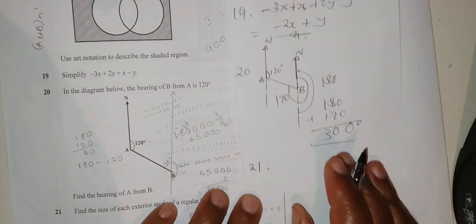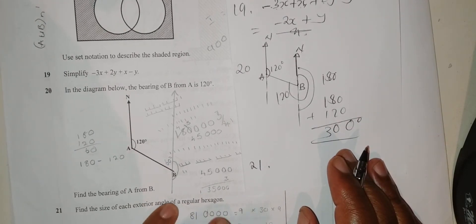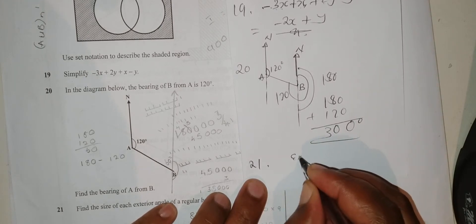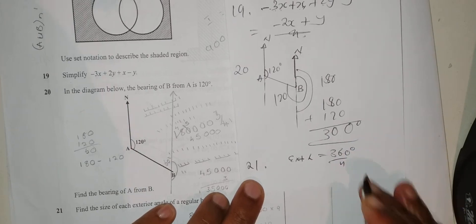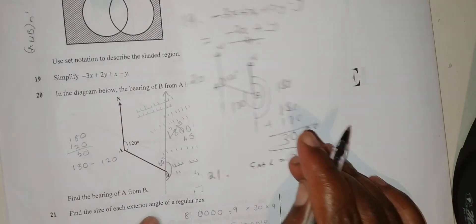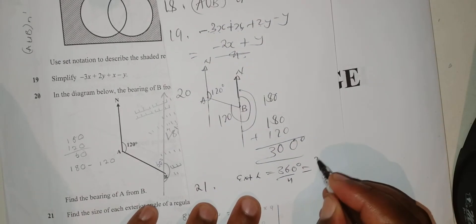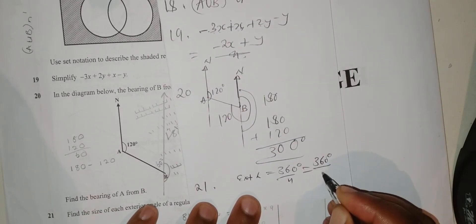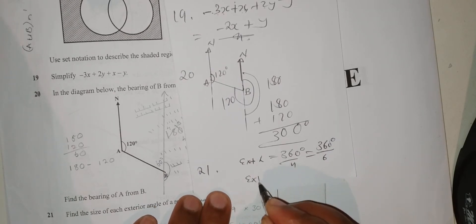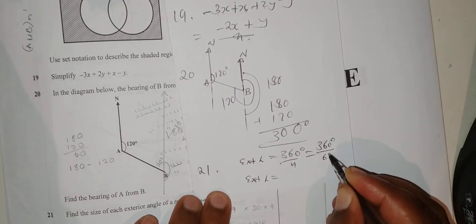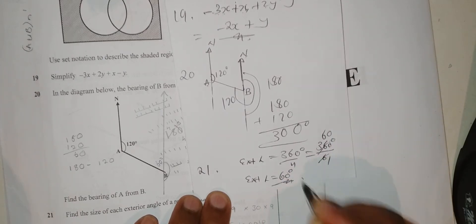Question 21: Find the size of each exterior angle of a regular hexagon. Exterior angle equals 360 degrees over N. Since this is a regular hexagon, it has 6 sides. 360 degrees over 6 equals 60 degrees.